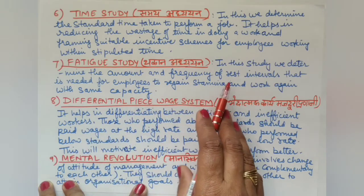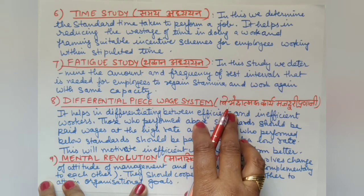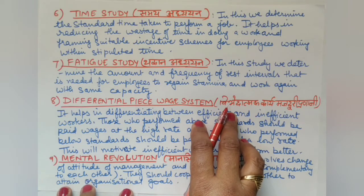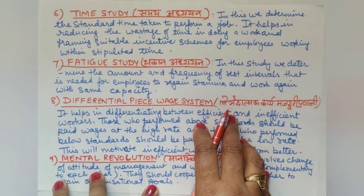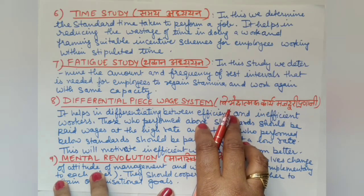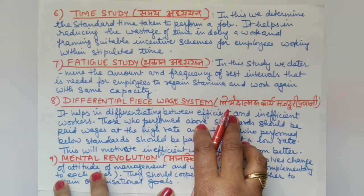We must determine when to give rest to workers — for example, after two or three hours of continuous work, we need to give a break. Workers need adequate rest intervals so that they can maintain their work capacity. Without rest, we cannot maintain their full productivity.